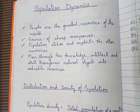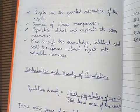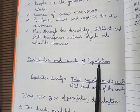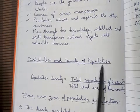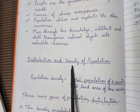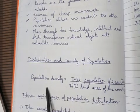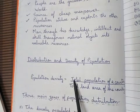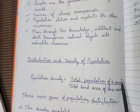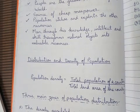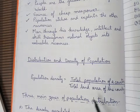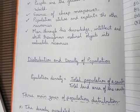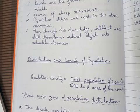Now we are going to see about the distribution and density of population. First, let me explain what population density means. To find out population density, we take the total population of any country, region, state, or city, and then divide it by the total land area. For example, to find the population density of India, we take the total population of India.